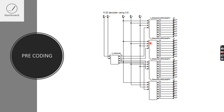The 5-to-32 decoder has 5 inputs. The ABC inputs are given to all four 3-to-8 decoders — all four receive the same ABC inputs. The 4th input is the enable pin, which is driven from the outputs of the 2-to-4 decoder. The 2-to-4 decoder outputs are Y0, Y1, Y2, and Y3. Y0 is given to the enable pin of the first 3-to-8 decoder, Y1 to the second, and so on up to Y3 given to the last 3-to-8 decoder's enable pin.